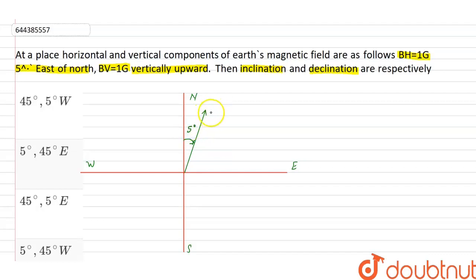Horizontal component of Earth's magnetic field BH, and vertical component of Earth's magnetic field BV, is in vertically upward.